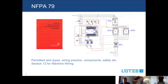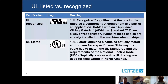NFPA 79 covers many subjects, but the one we're concerned with today regarding wire is Section 12, which determines what you can do with machine wiring. We'll now be looking at the two product standards that are relevant — UL recognized and UL listed. We'll look at these in detail and understand the differences. Both can be used under NFPA 79.